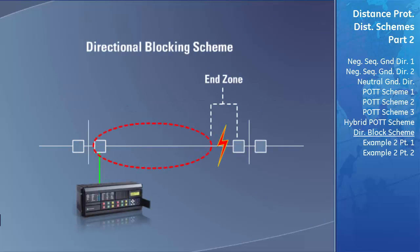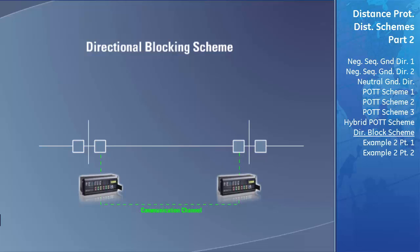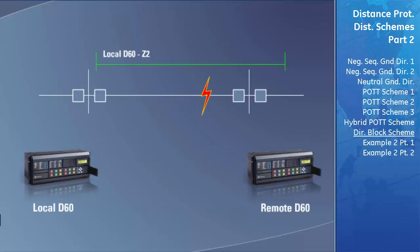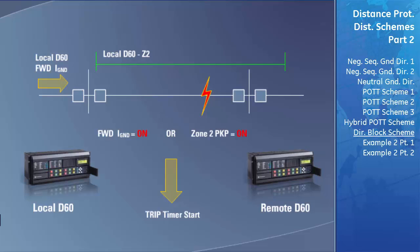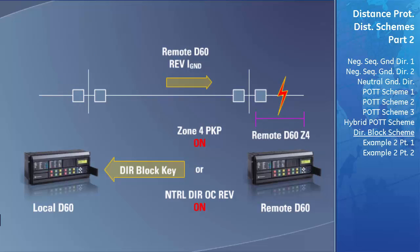The directional blocking scheme available in the D60 is one of the most popular types of teleprotection schemes used in distance applications today. Its purpose is to speed up the tripping of faults that occur in the end zone of a transmission line. In the directional blocking scheme, the local D60 has an additional delay timer started by detecting a fault inside its zone 2 area of protection or the detection of ground current flowing in the forward direction. This timer is set considerably shorter than the normal zone 2 delay. When this timer expires, the local D60 will trip the local breaker unless it receives a block message from the remote D60. The remote D60 will only send this blocking signal if it detects a fault in its zone 4 area of protection or detects that ground current is flowing in the reverse direction, both of which indicate an external fault.